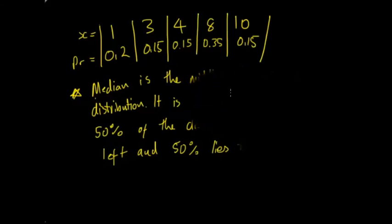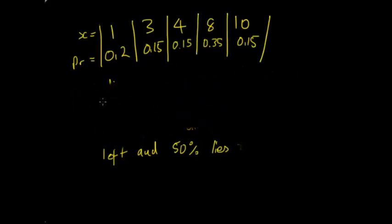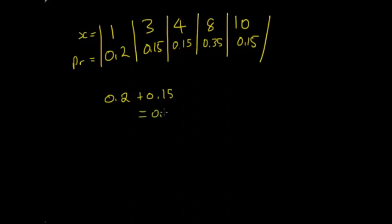Relating this to a table example, you want to find where the point is at 50%. You add up these: 0.2, that's less than 0.5, so I'll include 3. Add 0.15, that equals 0.35. We need to add a bit more, so add 4, that's 0.15, which gives us 0.5.